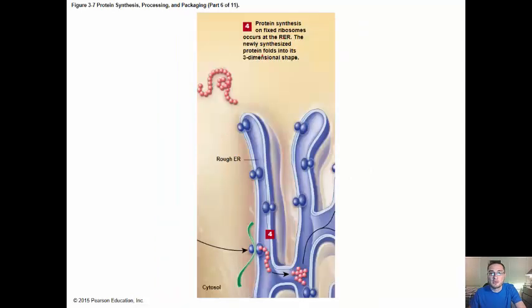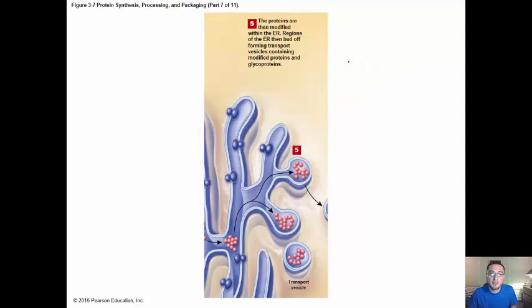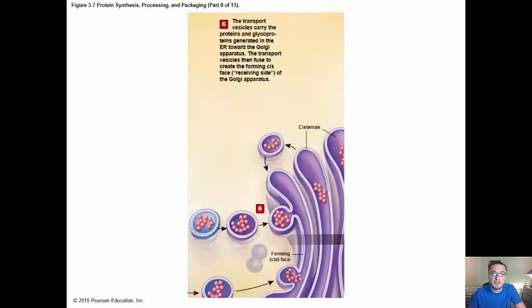The newly synthesized protein folds into its three-dimensional shape. So you have your proteins that have a primary shape, secondary shape, tertiary shape or structure, and then quaternary shape or structure. And then the proteins are then modified within the endoplasmic reticulum. Regions of the endoplasmic reticulum then bud off forming transport vesicles that are going to go to the Golgi apparatus. And the transport vesicles carry these proteins and glycoproteins generated in the ER towards the Golgi apparatus. The transport vesicles then fuse to form the cis face or the receiving face of the Golgi apparatus.